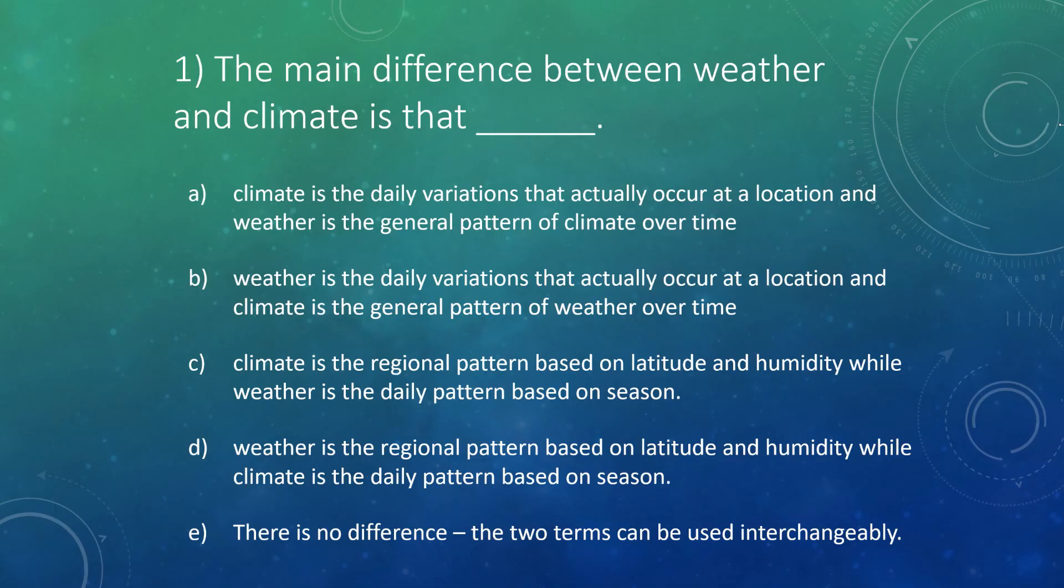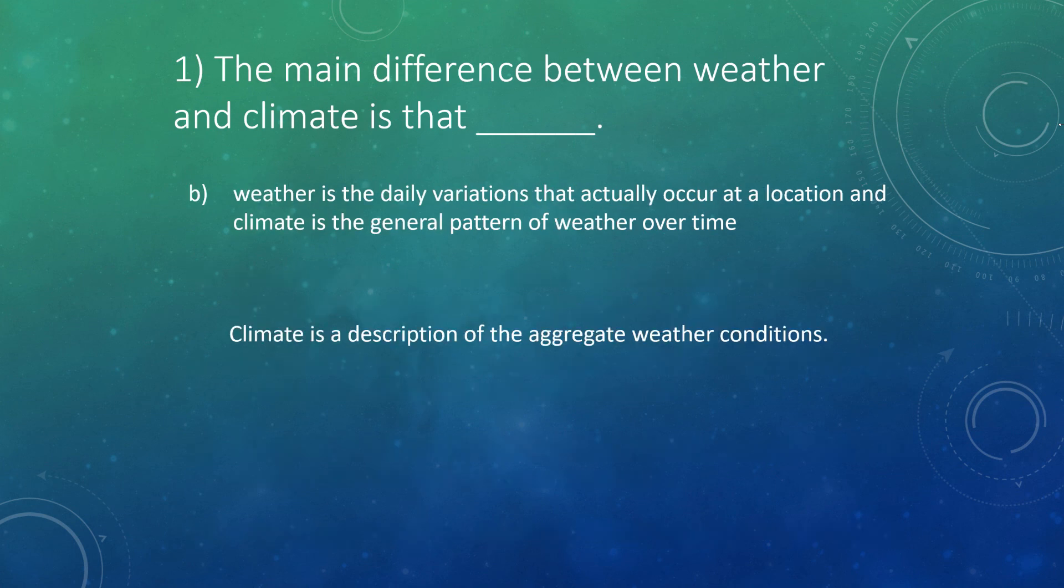Let's go ahead and take a look at some questions. Pause your lecture every time we get to a new question, think of an answer, and then restart it once you have one. Question one: The main difference between weather and climate is what? The answer here is B. Weather is the daily variation that actually occurs at a location where climate is the general pattern of weather over time.